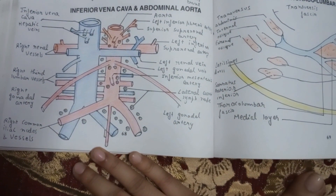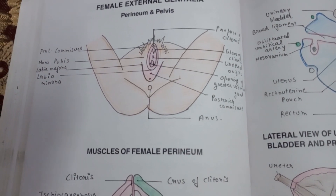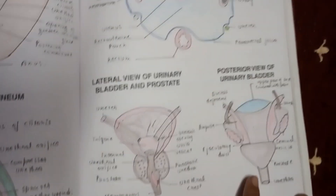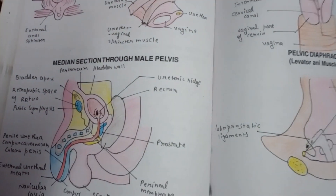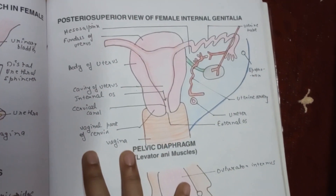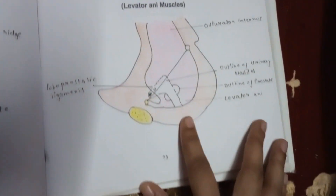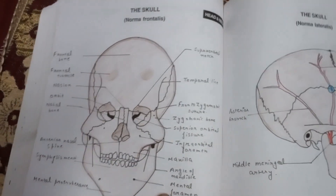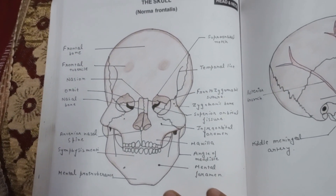Diaphragm. Inferior vena cava and your abdominal aorta. After that here comes the female external genitalia, and this is the whole diagram of your posterior superior view of female internal genitalia. Now it's your head and neck region — this is the diagram of the skull, this is the toughest diagram of this book.